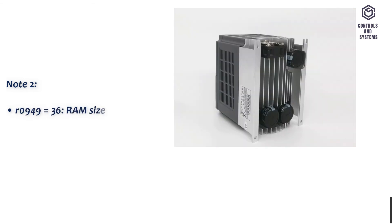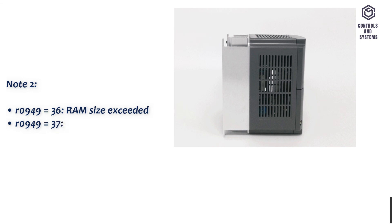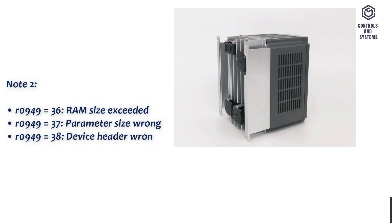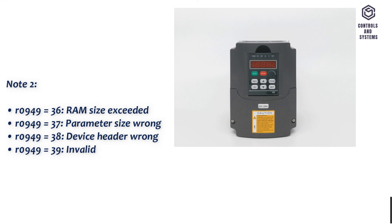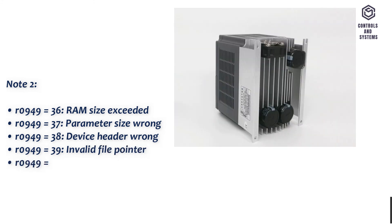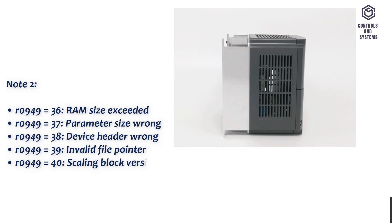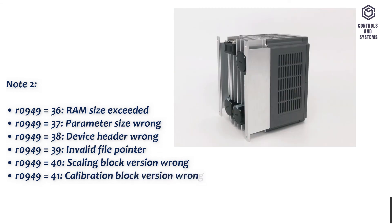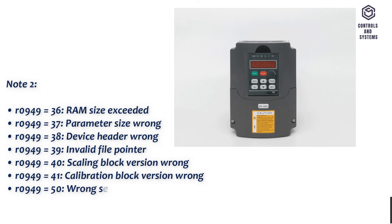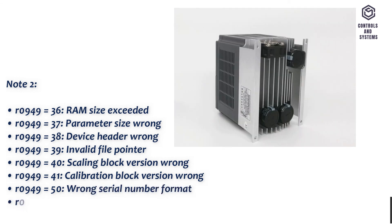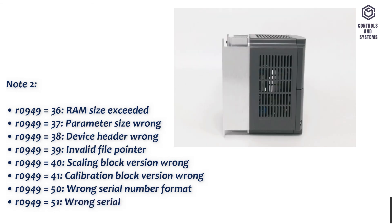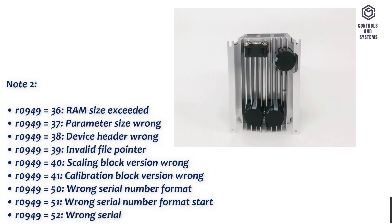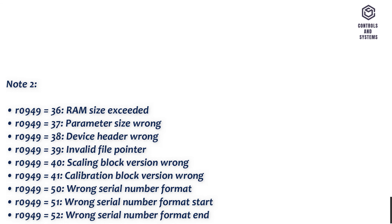Note 2: R0949 equals 36: RAM size exceeded. R0949 equals 37: parameter size wrong. R0949 equals 38: device header wrong. R0949 equals 39: invalid file pointer. R0949 equals 40: scaling block version wrong. R0949 equals 41: calibration block version wrong. R0949 equals 50: wrong serial number format. R0949 equals 51: wrong serial number format start. R0949 equals 52: wrong serial number format end.